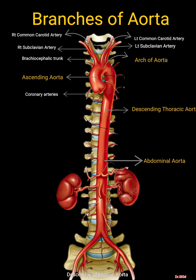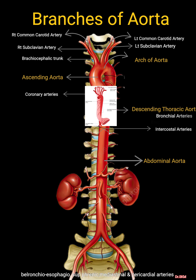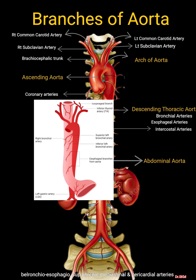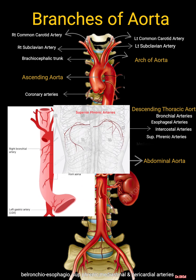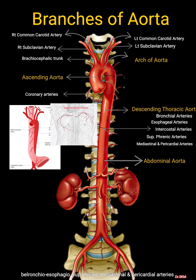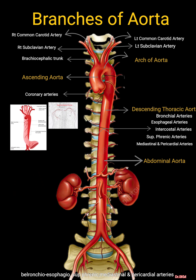The descending thoracic aorta gives intercostal arteries, bronchial, esophageal, superior phrenic, and mediastinal and pericardial arteries.